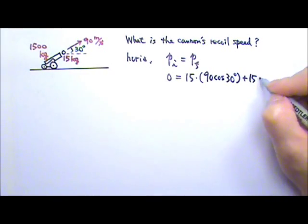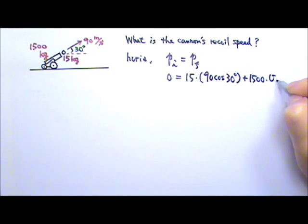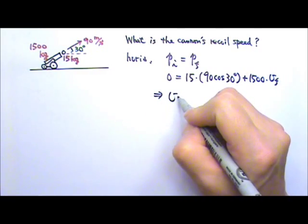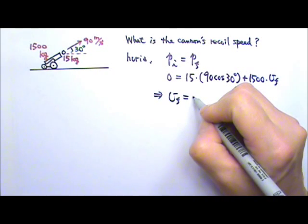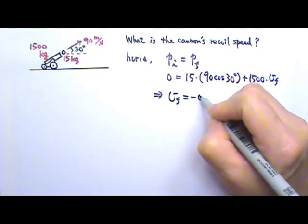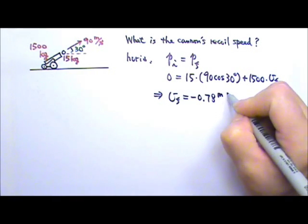The cannon has momentum, we just don't know the velocity and we're looking for it. And from this equation, we can find the velocity of the cannon after the explosion to be negative 0.78 meters per second.